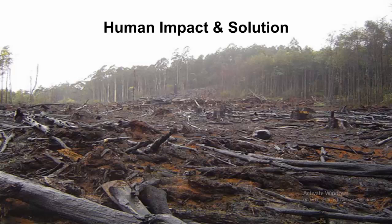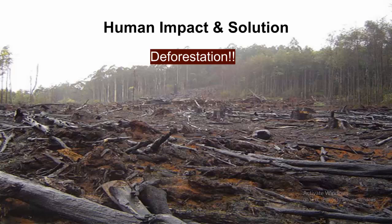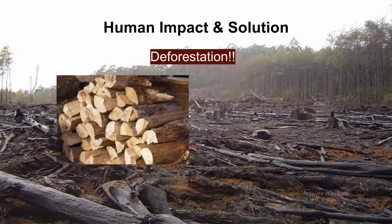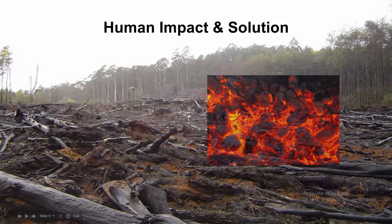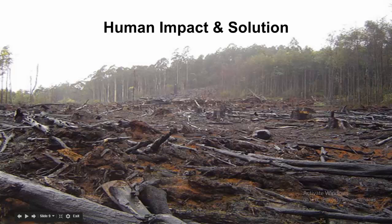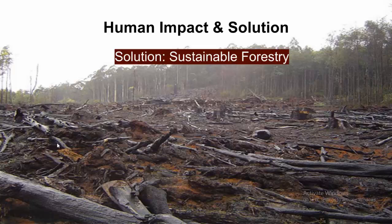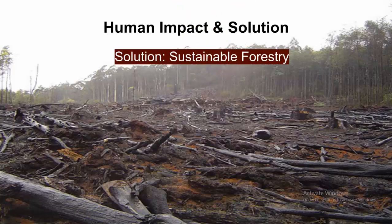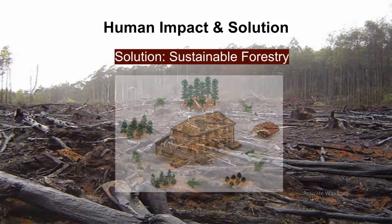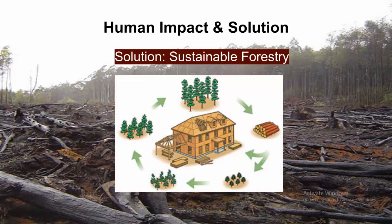Humans, unfortunately, have a very negative impact on tropical rainforests, and one of these impacts is deforestation. Deforestation is caused by people logging for firewood, charcoal, and many other reasons. One good solution to deforestation is sustainable forestry, which is already done by many corporations. A sustainable forest is carefully managed so that as trees are felled, they are replaced with seedlings that will eventually grow into mature trees.